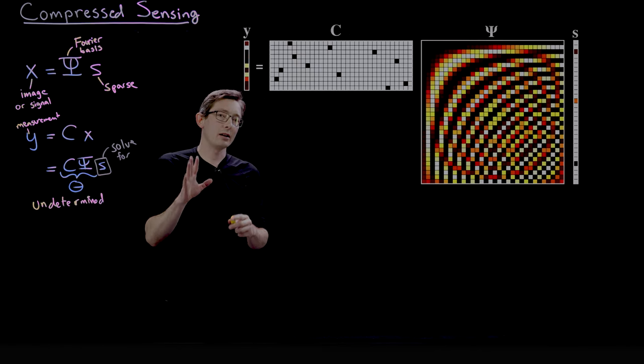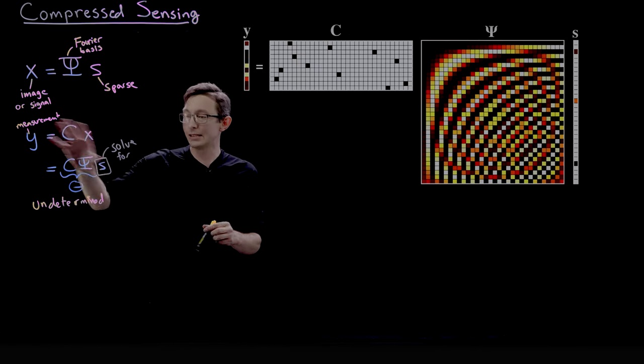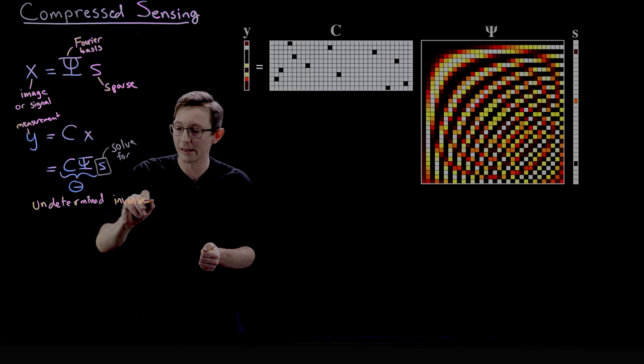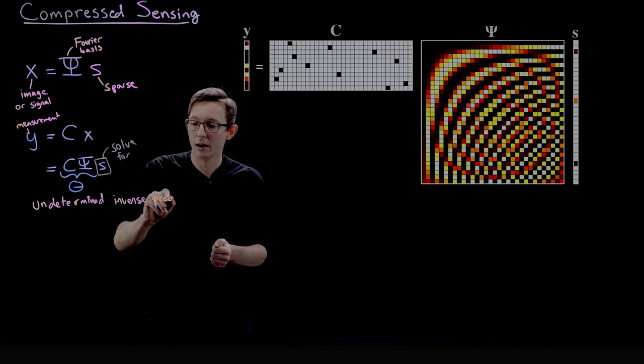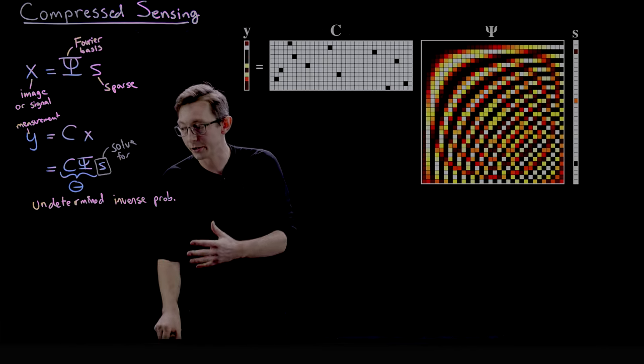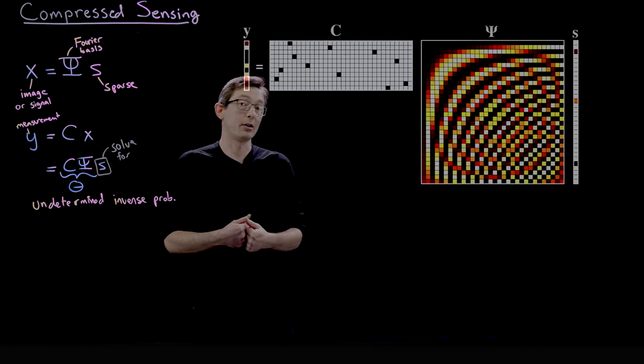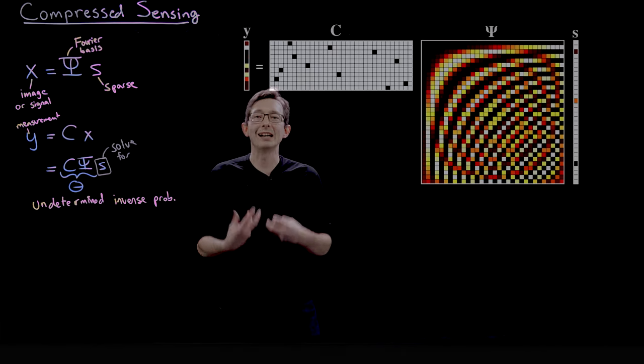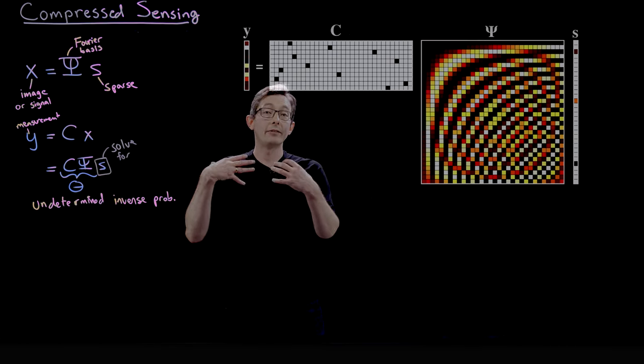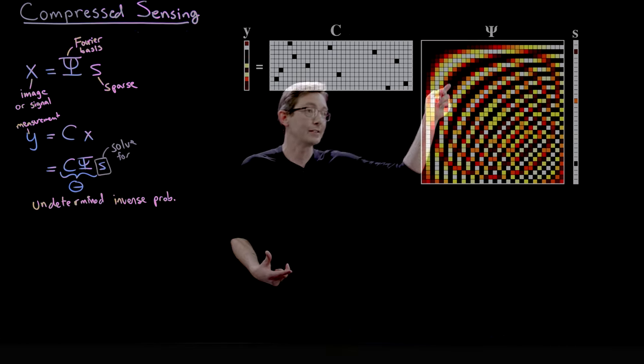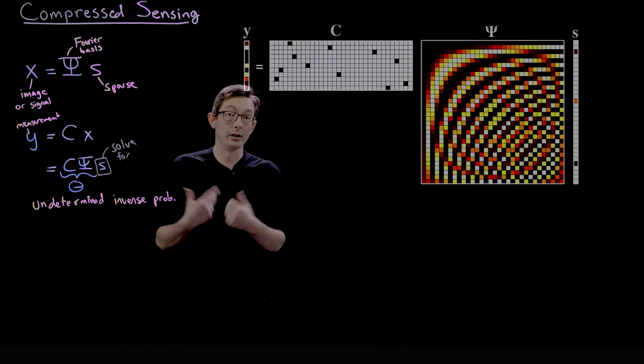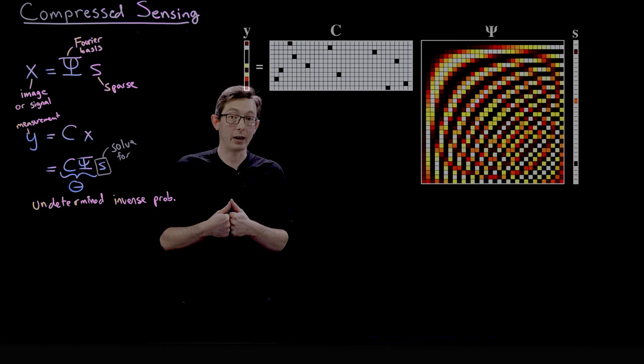And so this is where it gets really interesting. This is an underdetermined inverse problem. Because we're basically trying to invert y to solve for s. That's called an inverse problem. So this is an underdetermined inverse problem. And so we're going to have to use additional information. Out of all of these infinitely many s's, we're going to have to use additional information to find this very special particular s in our Fourier transform basis.